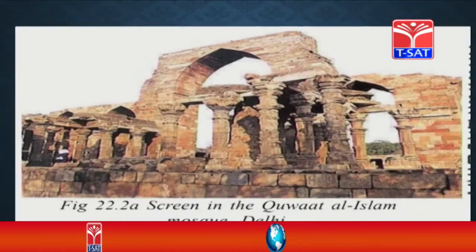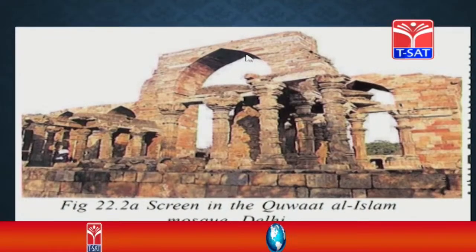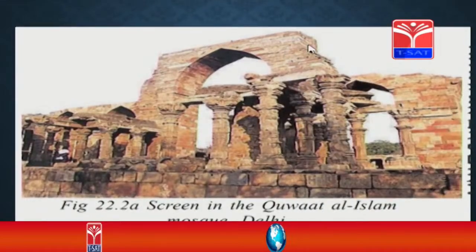With this technique, you can see in Delhi a scene in the Quwwat-ul-Islam mosque. The construction used the trabeate or corbelled shape.